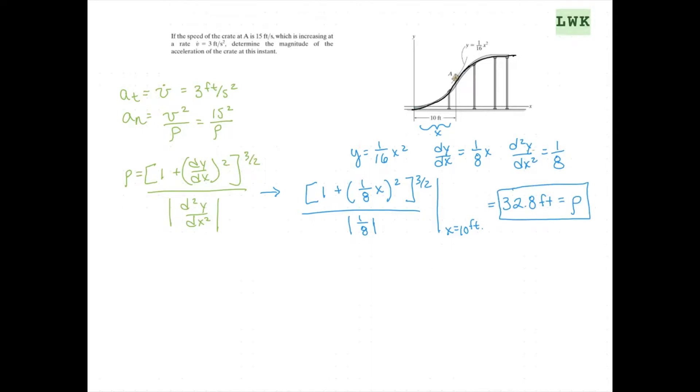So now that we know that, we can plug that in for our A_n. So we're going to see here that A_n equals 15 squared over 32.8, and that will work out to give us a value of about 6.9 feet per second squared equals A_n.